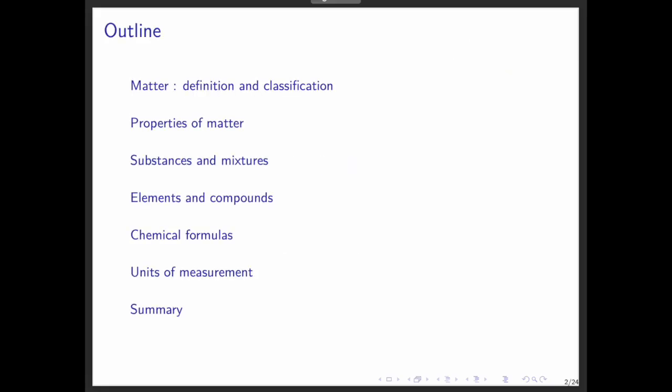We're going to start with the definition and classification of matter, what it is, and how we organize it. Then we'll look at the properties of matter, before moving on to the difference between substances and mixtures. Next, we'll talk about elements and molecules, and how we represent them using chemical formulas. Finally, we'll wrap up with the units of measurement that scientists use to study matter.